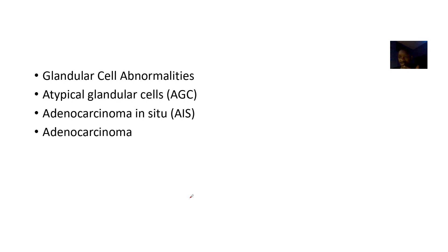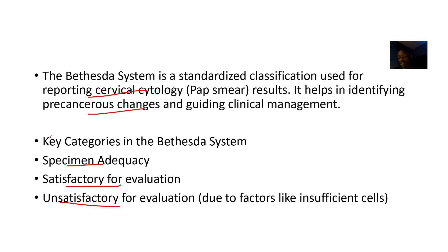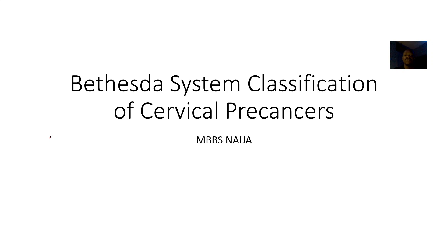For glandular cell abnormalities, we have atypical glandular cells, adenocarcinoma in situ, and adenocarcinoma proper. Those are the various categories under the Bethesda system of classifying cervical precursors.